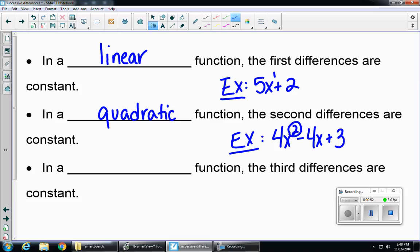In a cubic function, our third differences are constant. An example of a cubic function is x cubed minus 5x plus 7. It's cubic because it has an exponent of 3.